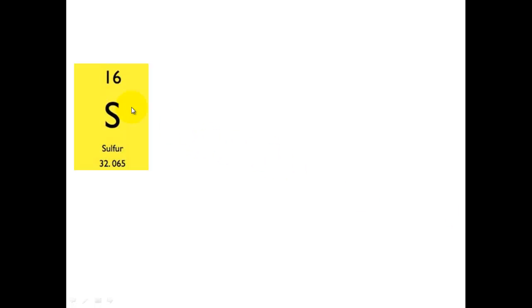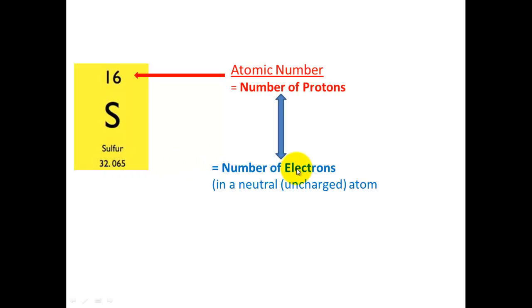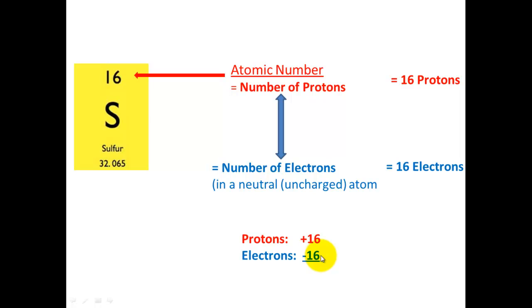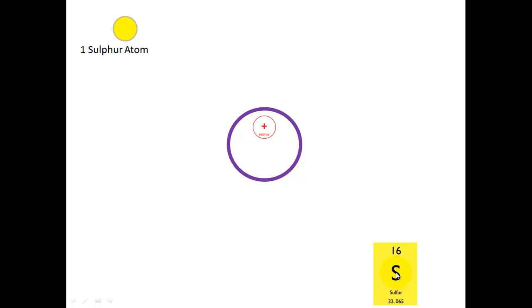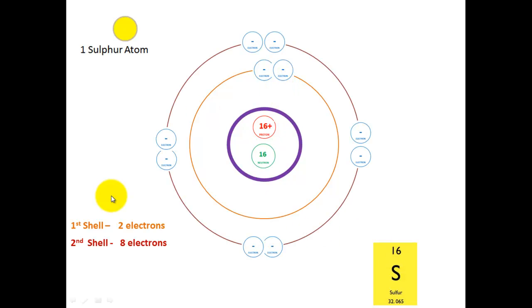Let's look at a second example: sulfur, atomic number 16, mass number 32. The number of protons equals the number of electrons in an uncharged atom, so 16 protons, 16 electrons, positive charge of 16, negative charge of 16, and a total overall charge of 0. Looking at that atom: 16 protons, 16 neutrons (mass number minus atomic number). So we've got 2 electrons in the first shell and 8 in the next shell.